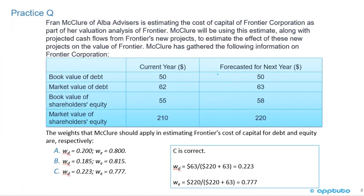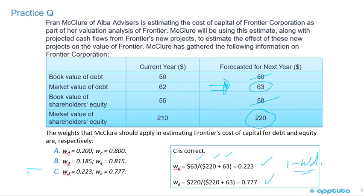This question shouldn't be too difficult. We're going to use the forecast for next year — that's the target capital structure, the forecast capital structure. They gave us some red herring information: we're not using the book values, we're going to use the market values. The weight of debt equals the market value of debt divided by market value of debt plus equity, giving us 22.3%. For the weight of equity, it's 1 minus the weight of debt, or 220 divided by 220 plus 63, which equals 77.7%. So the correct answer is C.